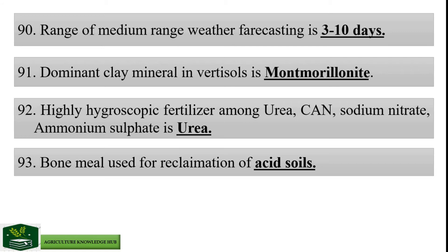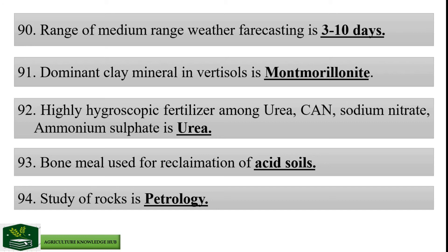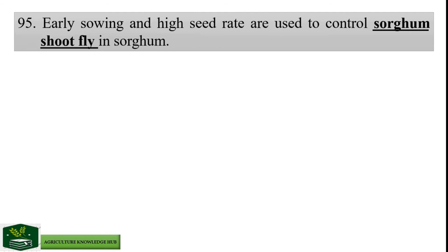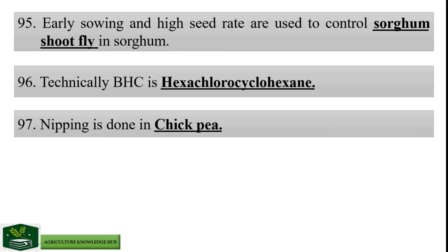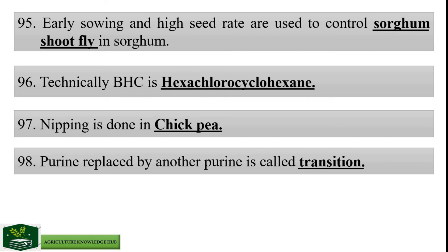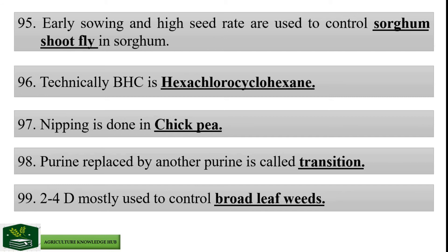Study of rocks is petrology. Early sowing and high seed rate are used to control sorghum shoot fly in sorghum crop. Technically BHC is hexachlorocyclohexane. Nipping is done in chickpea. Purine replaced by another purine is called transition. 2,4-D is mostly used to control broad-leaved weeds.